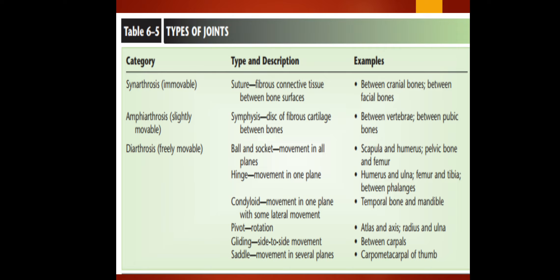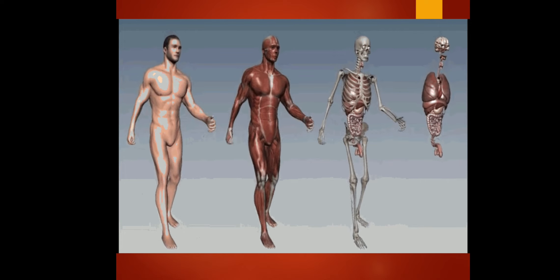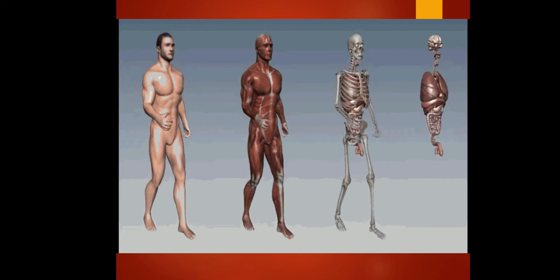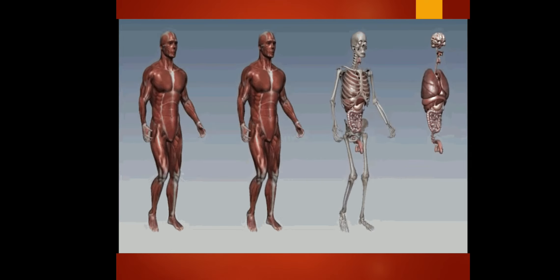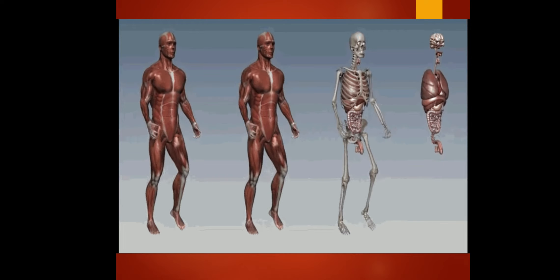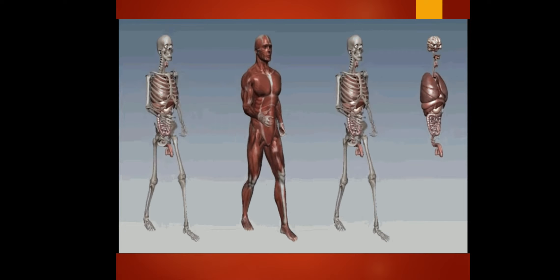There is also a table that summarizes and explains in an easy way the types of joints — from their description to their examples. I will not be reading that one now because I will be discussing it in a later part.